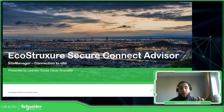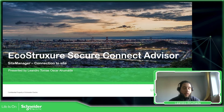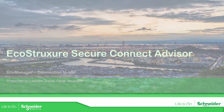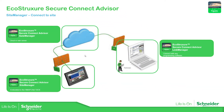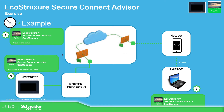For this example, what we're going to use is the Harmony HMI ST6400 to connect from our laptop to the site — that site would be the HMI. So if we go to the presentation, here is the solution we want to provide: remote access using the Secure Connect Advisor. In my case, I'm going to use the HMI, connect to the router, and then use my mobile phone to give internet to my laptop.